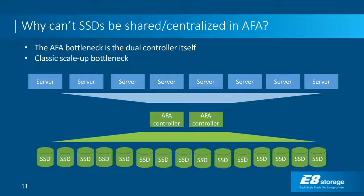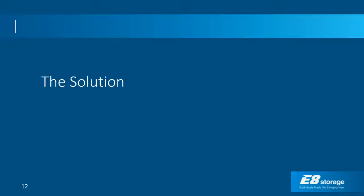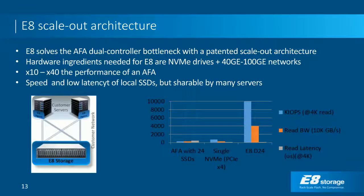In bake-offs against Gen 1 flash arrays for disk-replacement applications, the competition was manageable. But if the customer's current storage was Fusion IO, all the flash array vendors could not touch the performance of that local SSD storage. The solution is E8: a product that eliminates the all-flash array dual-controller bottleneck with a new patented scale-out architecture.